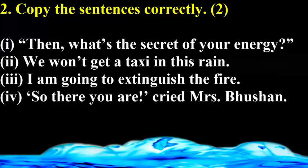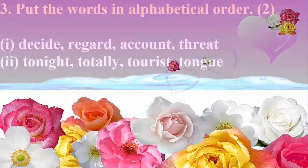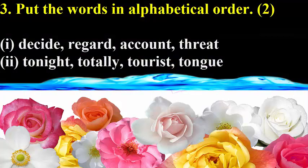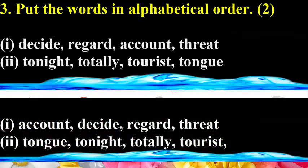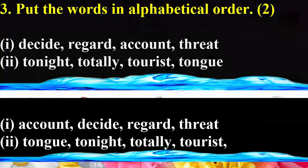The third sub-question is: Put the words in alphabetical order. It is a dictionary skill question. Two different types of questions will be given: in bit one, four words with different beginning letters; in bit two, four words with the same beginning letter. Each bit is for one mark. You just need to arrange the words alphabetically as they would appear in a dictionary. If you know A to Z, you can easily arrange them and get two marks.